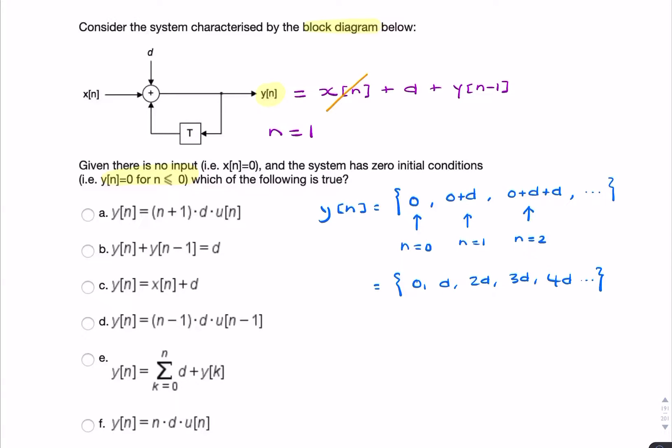If you look closely at each of these terms, for example 3d when n equals 3, each of these terms is simply n times d.